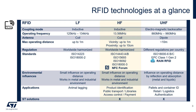RFID technologies can be divided into three different categories. The first is LF. The coupling mode is inductive and the operating frequency is 125 kHz to 134 kHz. The antenna is a coil and the max operating distance is up to 1 meter. The regulation is worldwide harmonized, so that anywhere in the world all LF readers operate the same, and it's based upon two ISO standards. Its primary function is animal tagging.